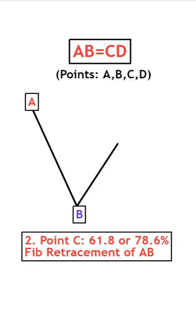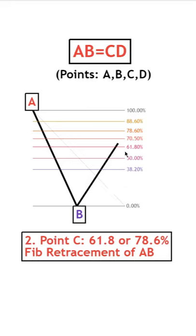Now for the next step to find point C, we'll need to draw a Fibonacci retracement from point A to B and point C needs to touch the 61.8 or the 78.6 level.